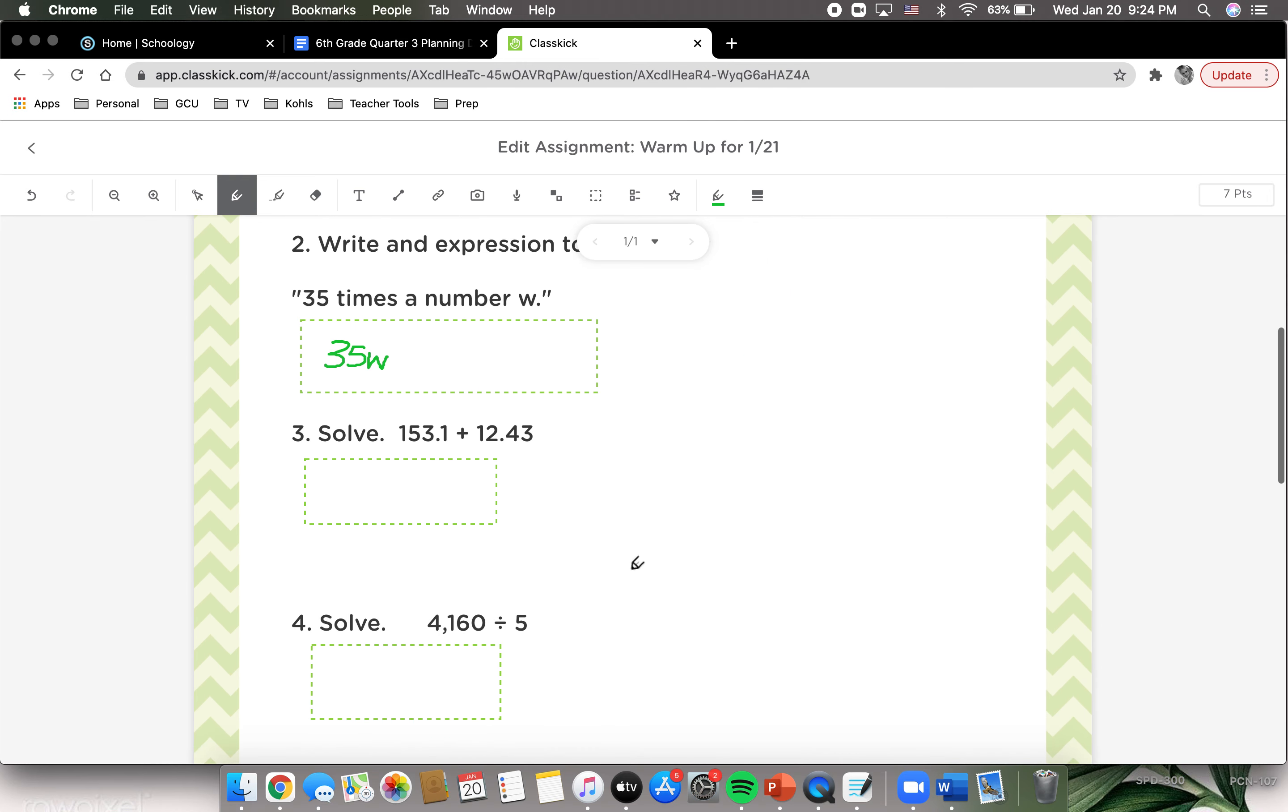Looking at number three, it says solve 153.1 plus 12.43. We are adding. We need to fill in this empty spot with a zero. We are going to add now. Zero plus three equals three. One plus four equals five. We're going to bring down our decimal point. Three plus two equals five. Five plus one equals six, and one. The answer is 165.53.